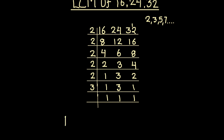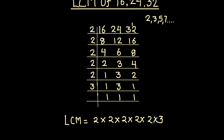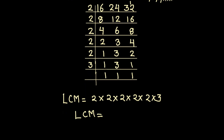To find the LCM, we take the product of all the prime factors on the left-hand side of the ladder. So the LCM will be 2 times 2 times 2 times 2 times 2 times 2 times 3. Calculating: 2 times 2 is 4, 4 times 2 is 8, 8 times 2 is 16, then 2 times 3 is 6, and 16 times 6 is 96. So our LCM is 96.